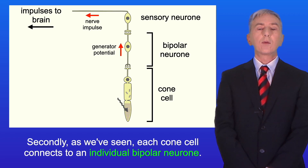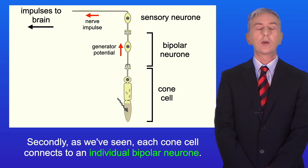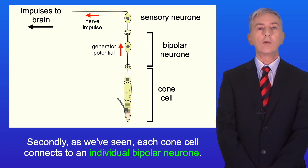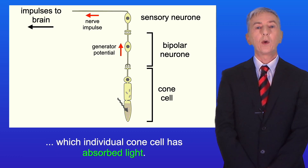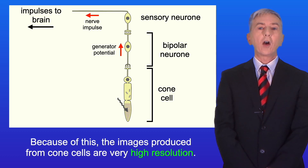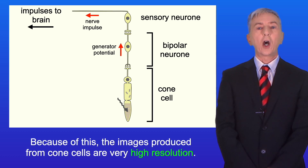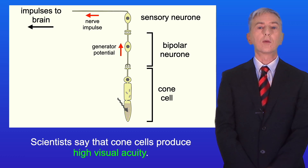Secondly, as we've seen, each cone cell connects to an individual bipolar neuron. This means that the brain can determine which individual cone cell has absorbed light. Because of this, the images produced from cone cells are very high resolution. Scientists say that cone cells produce high visual acuity.